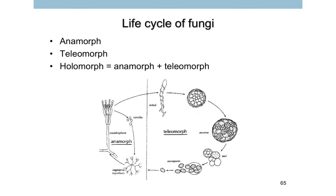Fungi have a life cycle. If they proliferate by an asexual state, they produce asexual spores called conidia to give rise to another mycelium — this is called the asexual state or anamorphic state. On the right-hand side is the sexual state: sometimes they can mate, even homothallic or heterothallic, and produce fruiting bodies containing asci and ascospores. These spores are different from the left-hand side conidia because they have genetic material change. Together with the anamorph and teleomorph we call it the holomorph — the whole life cycle of a fungus.